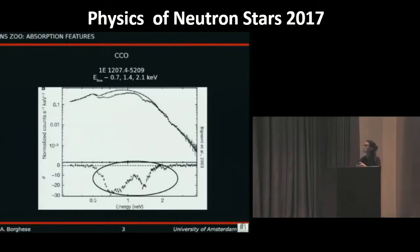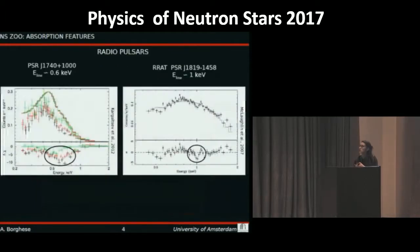But also among the radio pulsars we have few examples such as the pulsar J1740 with a feature around 0.6 keV or the highly magnetized RAT J1819 with a feature around 1 keV.